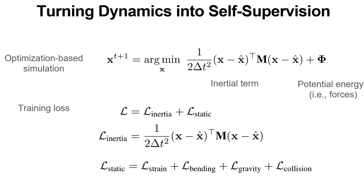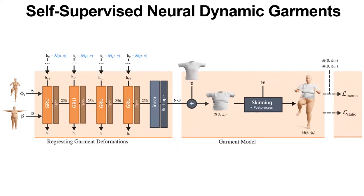Inspired by works from cloth simulation literature, we define the static term as the sum of different energies that emerge on deformable solids, including strain, bending, gravity, and collisions. Notice that the formulation of this term is general, and the definition of energy depends on the material model used. To self-supervise the training process of our garment regressor, we fit in human motions and shapes from publicly available datasets. Our regressor consists of 4 GRU units and an MLP layer that regress per-vertex 3D offsets. These offsets are added into a garment template and skinned with standard blend skinning techniques. The resulting mesh is then evaluated with our self-supervised loss, enforcing deformations that fulfill a physics-based criteria.